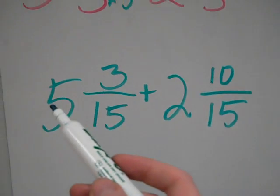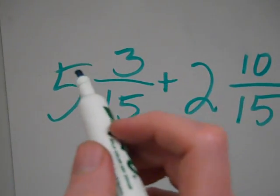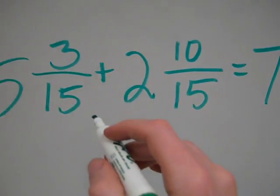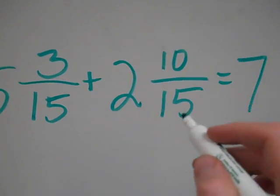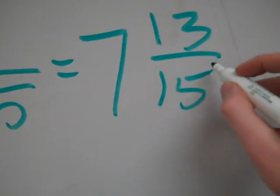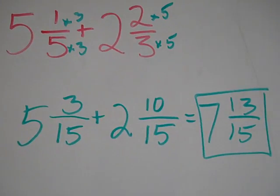And now I'm just going to add my whole numbers. Now that I have common denominators, I can add. So 5 and 2 is 7. And then 3/15 plus 10/15 is 13/15. And that is in simplest form. 13/15 is already reduced.